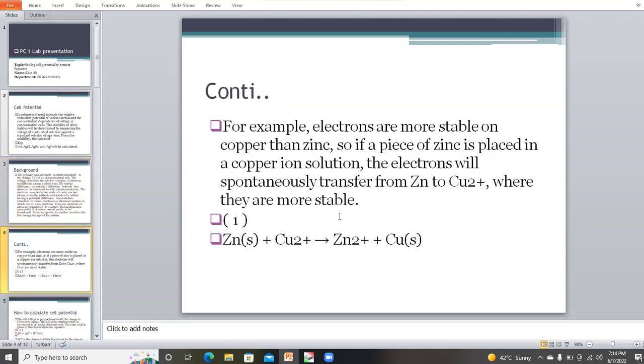For example, the electrons are more stable in copper than zinc. So if a piece of zinc is placed in the copper solution, the electrons will be spontaneously transferred from zinc to copper where they are more stable. There are plus two charges from copper and zinc have electrons. The electrons transfer from zinc to copper.